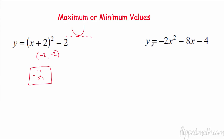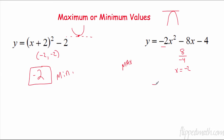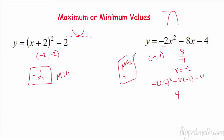Over here in standard form it's not as nice. The coefficient is negative, so we know it opens down, therefore it's going to be a maximum. I need to find the vertex: negative b is negative negative 8, which is 8, over 2 times a — a is negative 2, so 2 times negative 2 is negative 4. My x-coordinate is negative 2. Plugging in: negative 2 times (-2)² minus 8 times (-2) minus 4 gives a y-value of 4. Vertex is at (-2, 4), so the maximum value is 4.